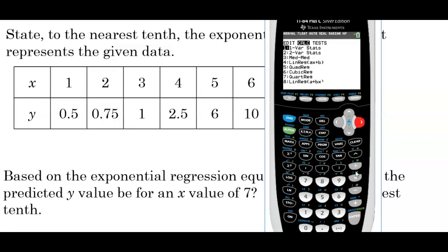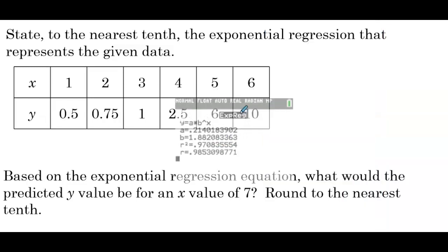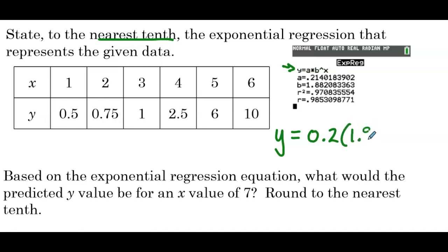Hit stat, go over to calc. Normally we choose choice 4, but we're going to scroll all the way down to choice 0 — that's right after 9. You can see 0 is ExpReg, exponential regression. You could also just hit 0 on the numeric keypad. Hit enter, we see L1 and L2, scroll down to calculate, and hit enter. There we have our values. The exponential function is of the form A times B to the X, and they tell us what A and B are. Rounding to the nearest tenth, our exponential regression is y equals 0.2 times 1.9 to the X.